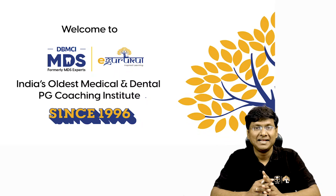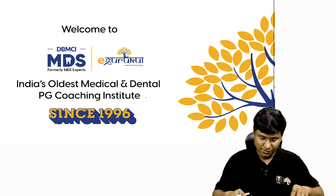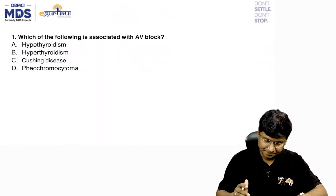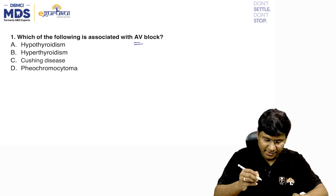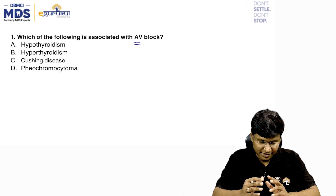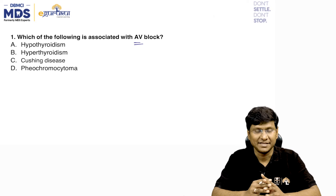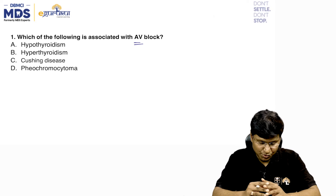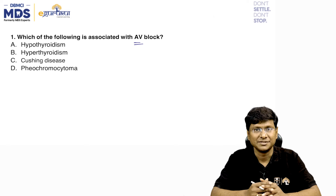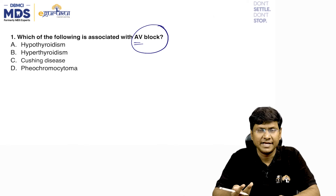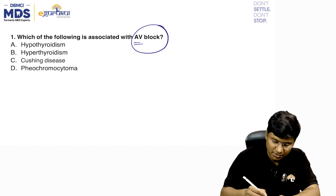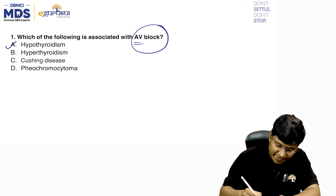Hello everyone, let me do a quick discussion of the questions of Grand Test 4. The first question is: which of the following is associated with AV block? The options are hypothyroidism, hyperthyroidism, Cushing's syndrome, and pheochromocytoma. AV block — first degree, second degree, or third degree — is associated with hypothyroidism.